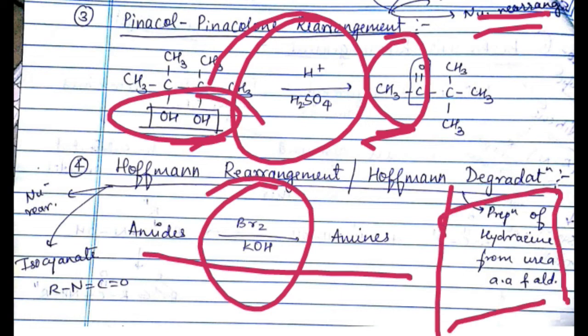Preparation of hydrazine from urea and amino acid and aldehyde is because of Hoffmann degradation, nucleophilic rearrangement reaction and the intermediate form is isocyanate.